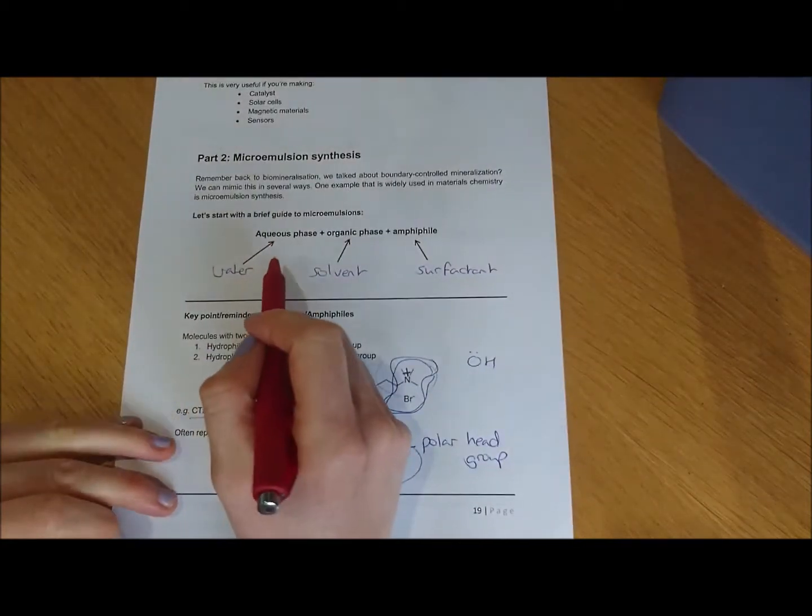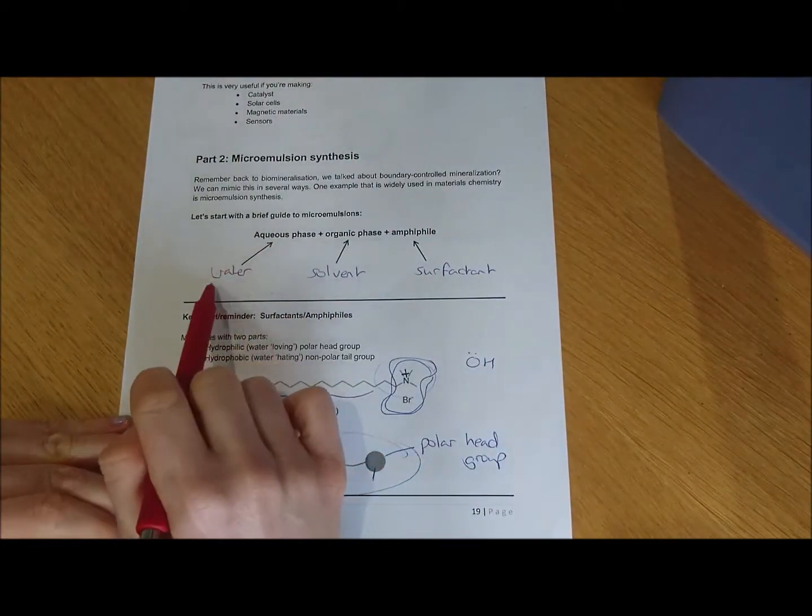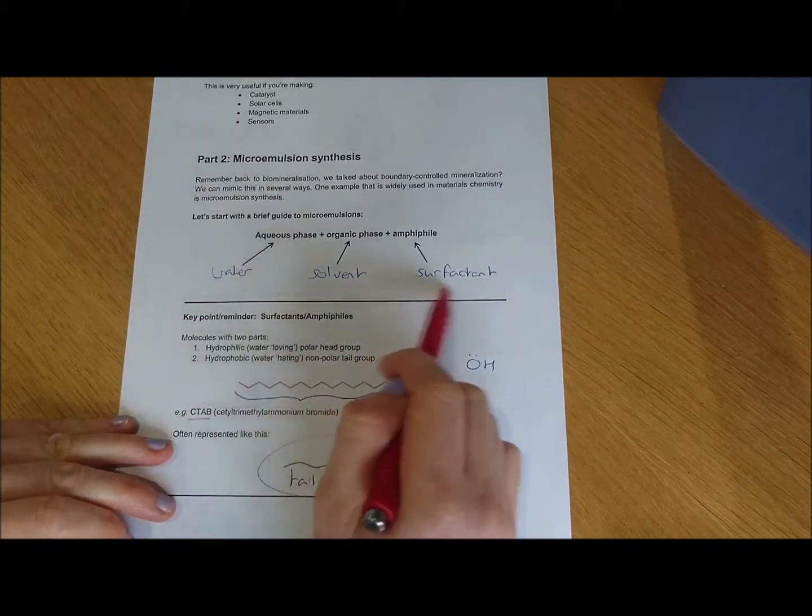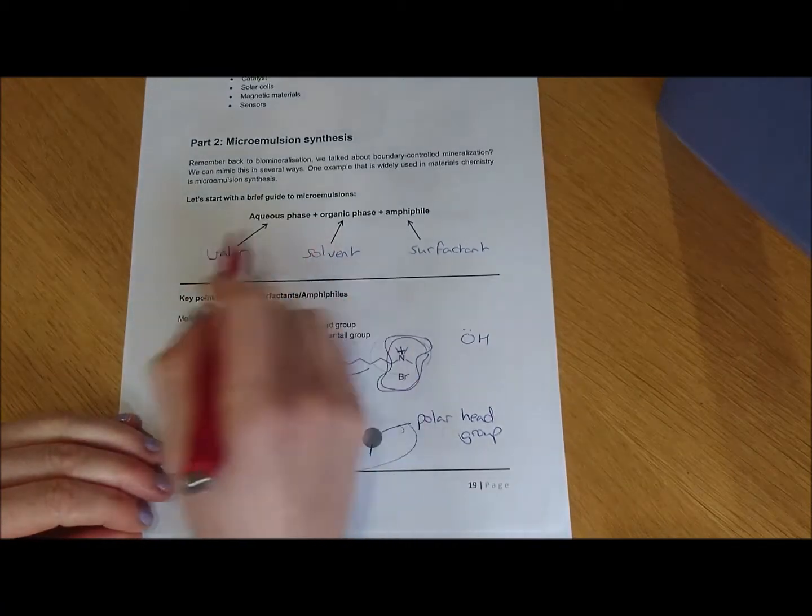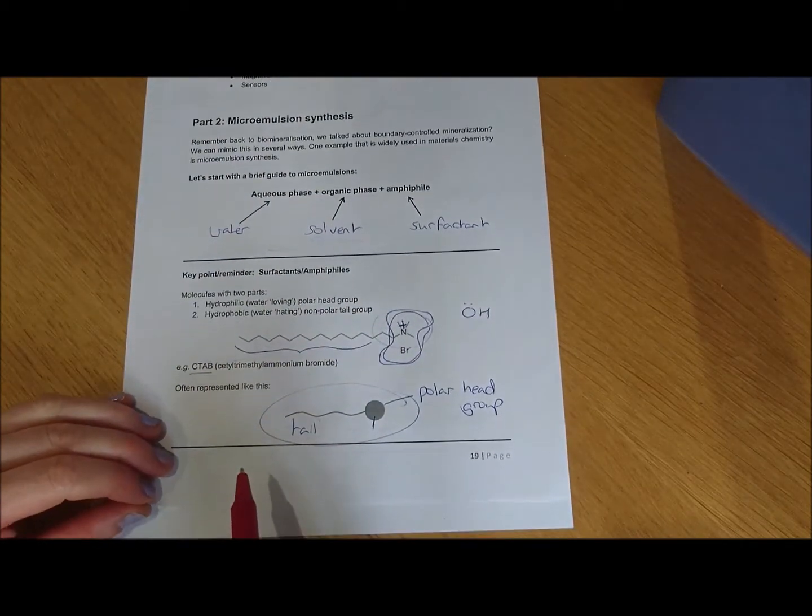We'll start with a brief guide to microemulsions. There's three phases in a microemulsion. You've got your water, your solvent, and your surfactant. So that's the amphiphile, the surfactant molecules that are stabilizing the droplets in your phase.